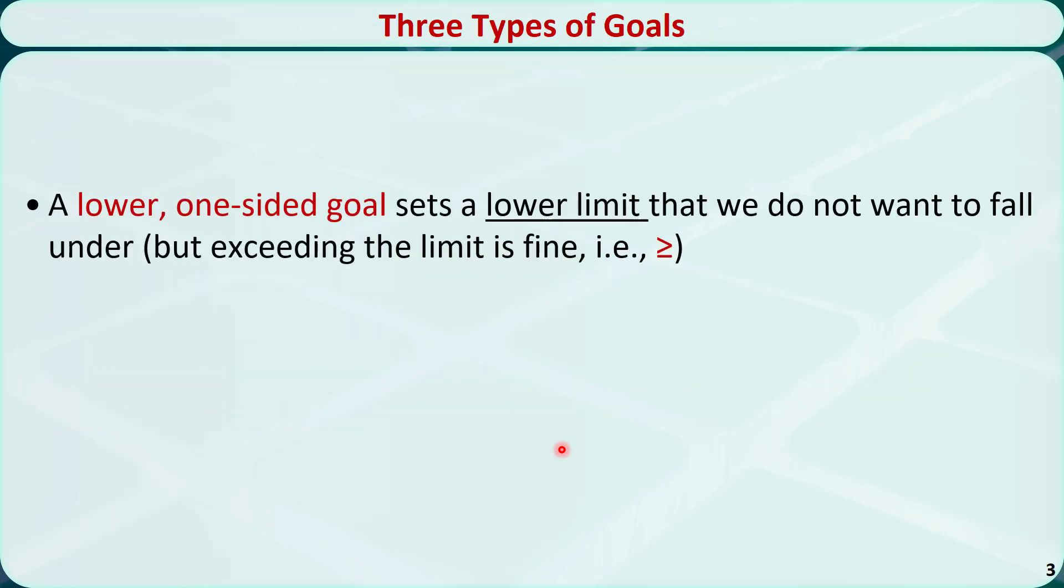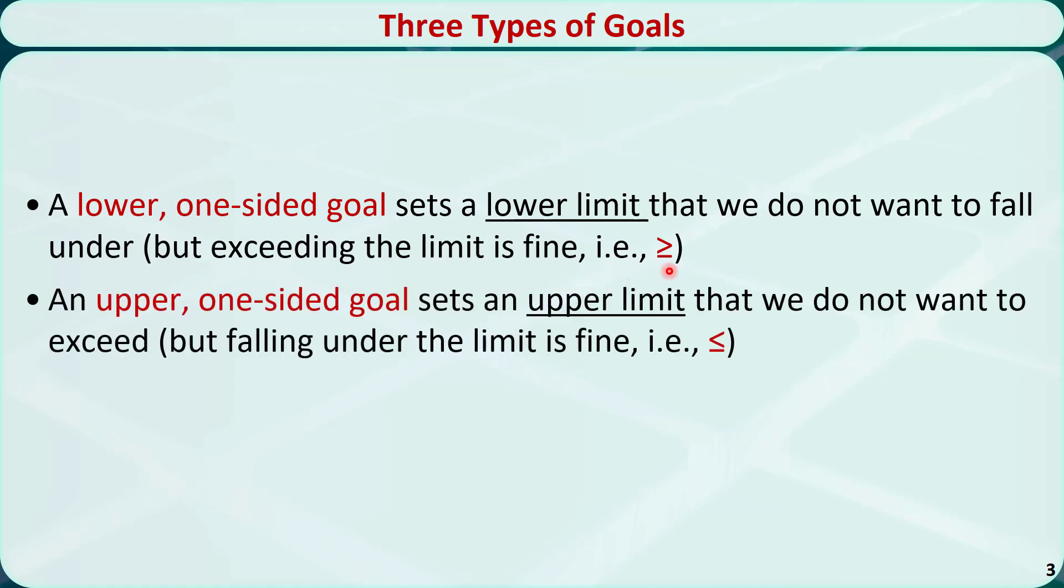In general, there are three types of goals. A lower one-sided goal sets a lower limit that we do not want to fall under, but exceeding the limit is fine. This corresponds to a greater than or equal to constraint.